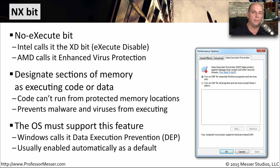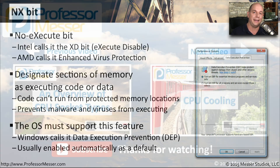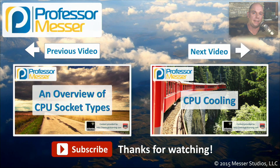To use this capability, our operating system must be aware of this NX bit. If you look in Windows, you'll see a feature called Data Execution Prevention, or DEP. This is turned on automatically by default, and it's already using the capability of your CPU to keep all of the executable code running in its own space.